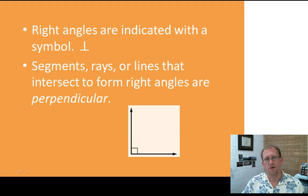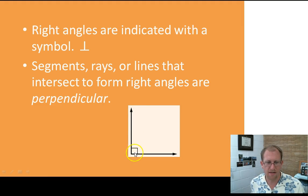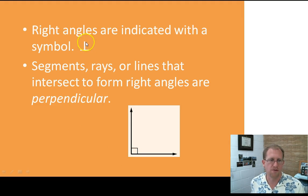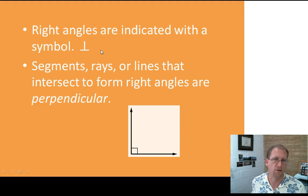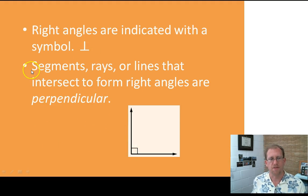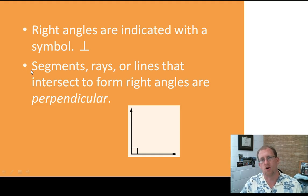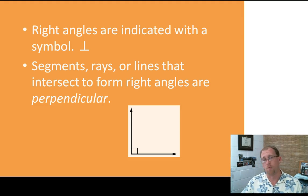If a right angle is present, we can use a symbol — we draw a small box inside the angle to indicate it's a right angle. Or if we're talking about lines meeting at a right angle, we use an upside-down T symbol. Segments or lines that intersect to form right angles are called perpendicular. So either the box or the upside-down T symbol works to denote perpendicular lines meeting at a right angle.